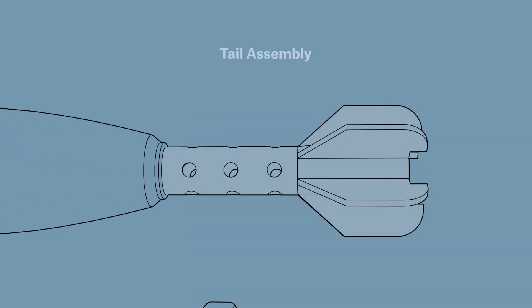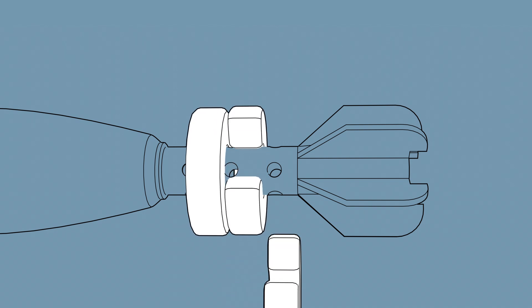The tail assembly is the most distinctive part of mortar projectiles, with flash holes and a characteristic fin structure. Additional propellant charges can be attached and detached on the mortar's tail, increasing the firing range.